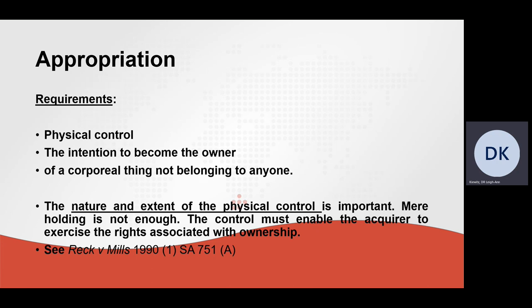Appropriation. To acquire ownership by means of appropriation, there must be physical control, the intention to become the owner of a corporeal thing not belonging to anyone else. The nature and extent of the physical control is important. Mere holding is not enough. The control must enable the acquirer to exercise the rights associated with ownership.